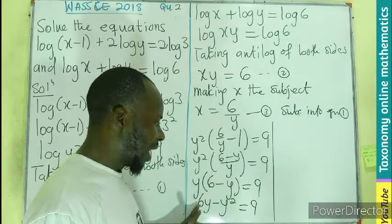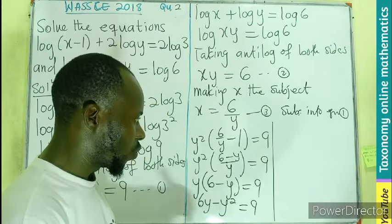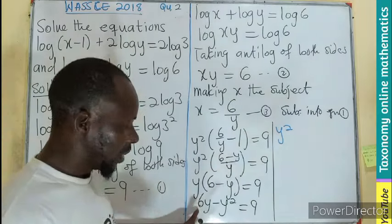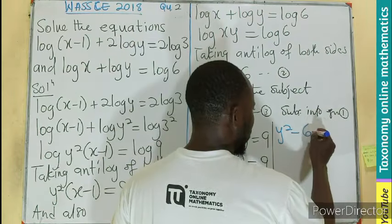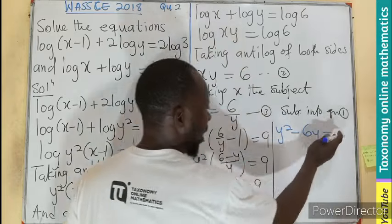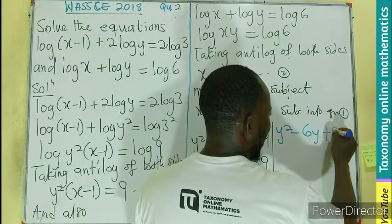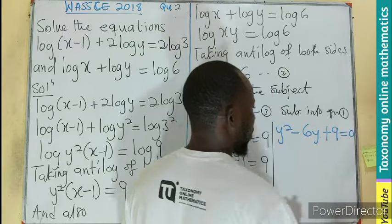Sending everything from the left to the right. So your y² will become positive y². This is positive, it becomes negative 6y. Then the 9 is already there. So we have it as positive. Equals to 0.